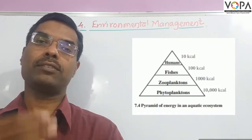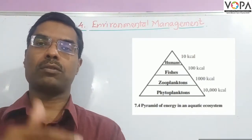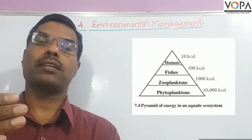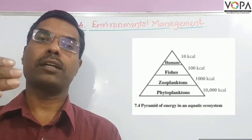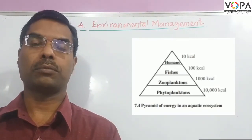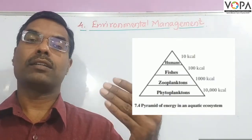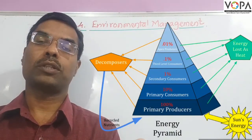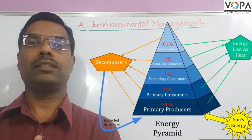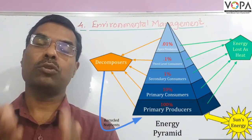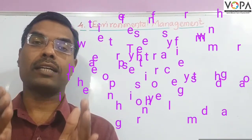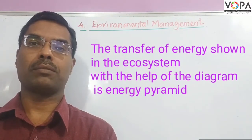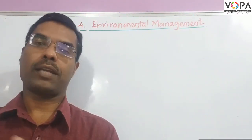To take an example: producers having 10,000 kilocalorie energy, then only 1,000 kilocalorie energy is transferred to the primary consumer. Then only 100 kilocalorie is transferred to the secondary consumer level. And then only 10 kilocalorie energy is transferred to the next tertiary consumer or apex consumer. In this way, the energy transfer found in the ecosystem is shown with the help of a diagram, and that diagram is called the energy pyramid.